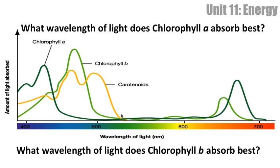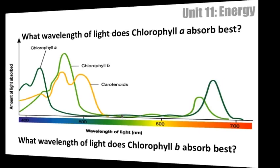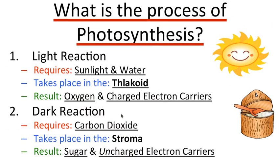Having different pigments is an advantage because we can absorb more across different types of light, meaning we can absorb more energy and thus do photosynthesis more often. There are two reactions that take place in photosynthesis. The first is known as the light reaction, because it requires sunlight and water, takes place in the thylakoid, and gives off oxygen as a byproduct.